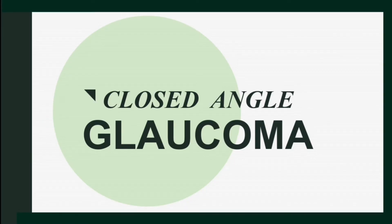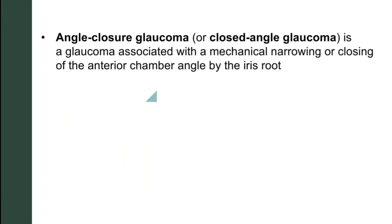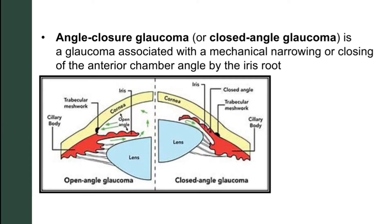Let's talk about closed angle glaucoma. Angle closure glaucoma is a glaucoma associated with a mechanical narrowing or closing of the anterior chamber angle by the iris root. On the right you can see closed angle glaucoma — the angle is closed by the root of the iris. If you look at open angle glaucoma, the angle is open.